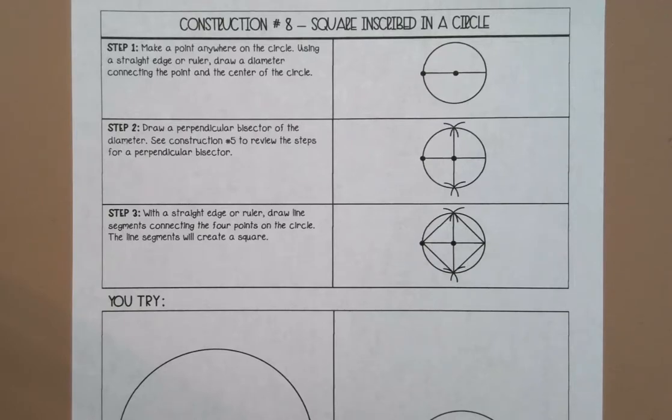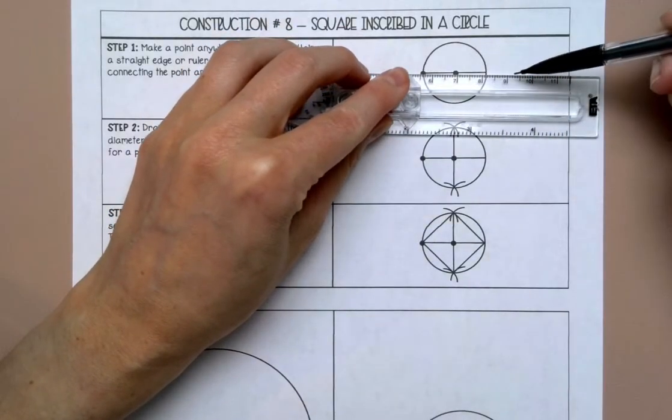Welcome to this lesson on constructing a square inscribed in a circle. So the first thing that we're going to do is put a point anywhere on the circle and we're going to draw a diameter through the center and that point.